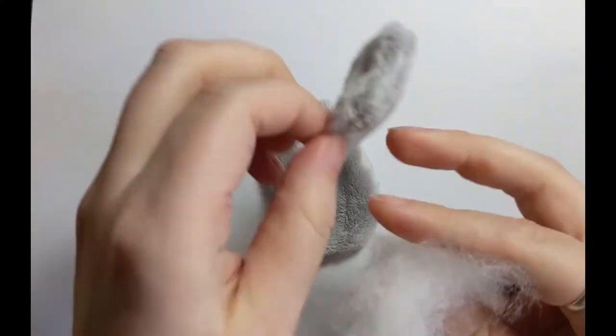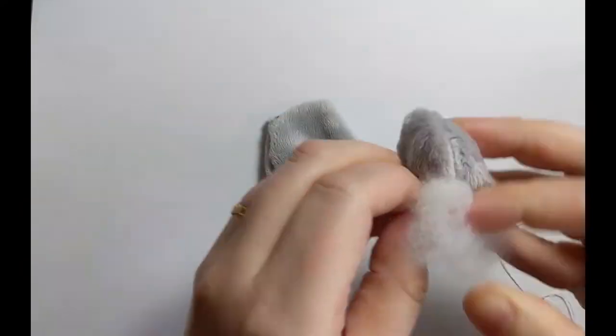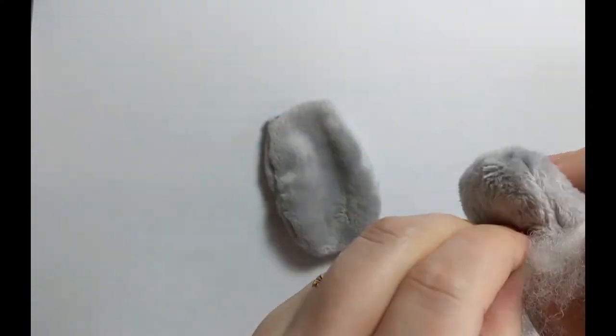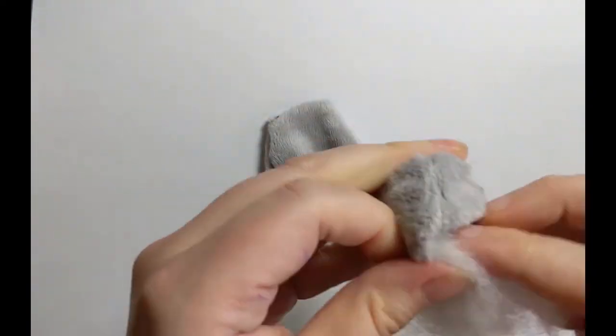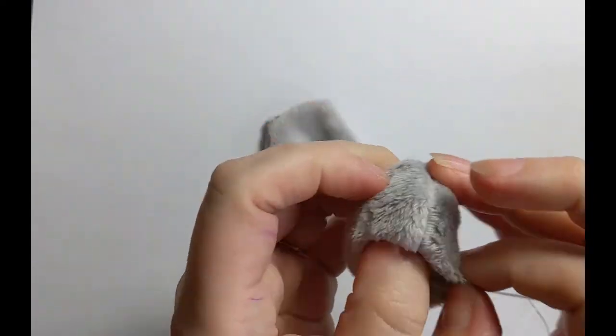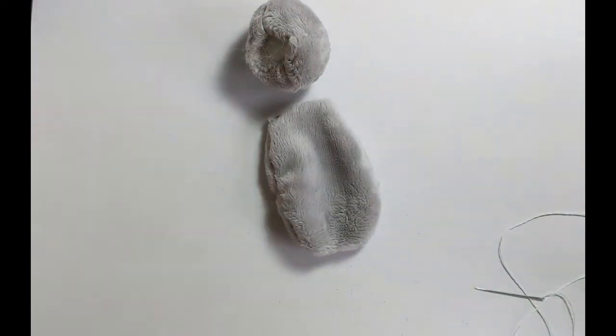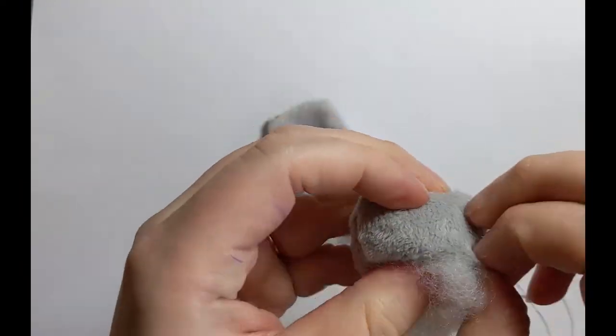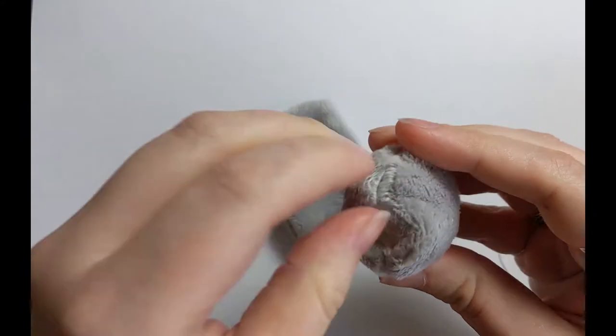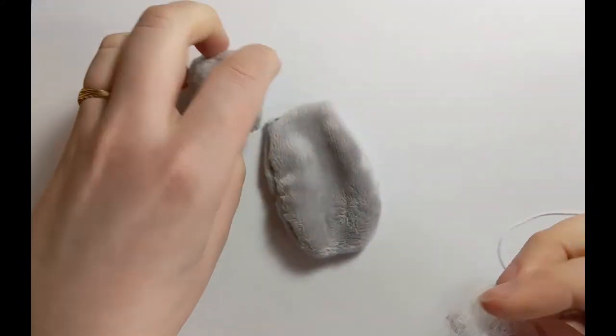And so now we move on to the stuffing. So it's just a regular plain wadding, pulling apart so it's nice and fluffy. Just take a little bit of time and keep feeling that texture until it's sorted. It needs to be quite firm because you're going to be stitching things together and adding a face and limbs and everything, so if it's too soft it won't work right.